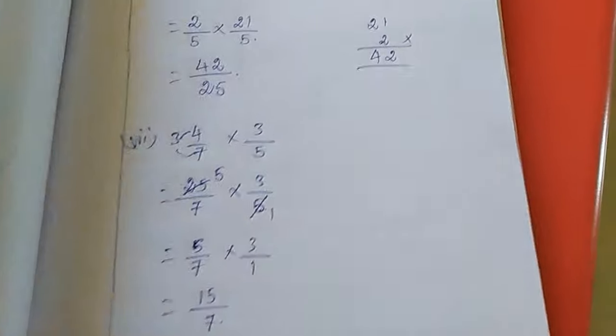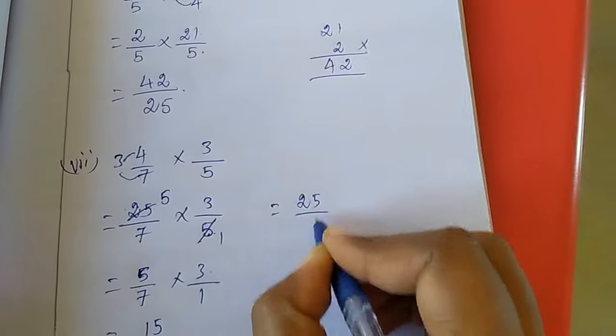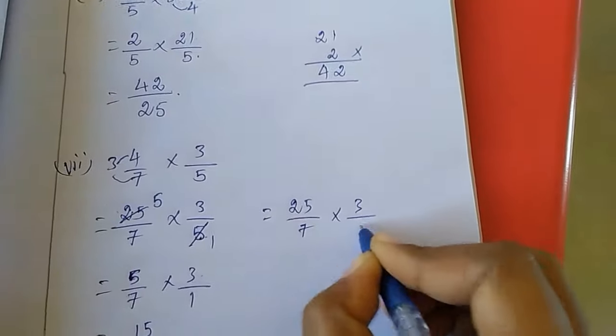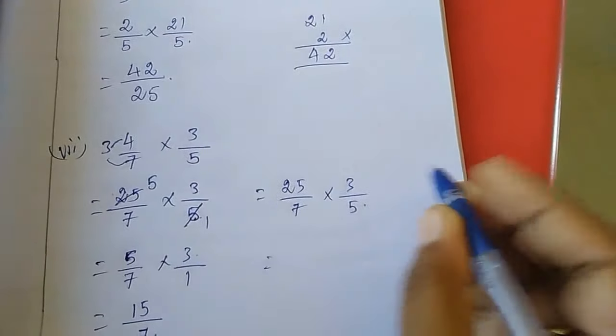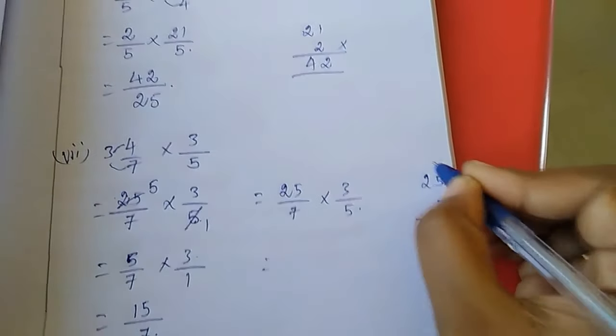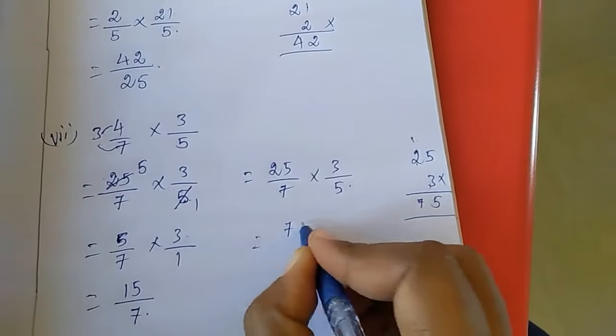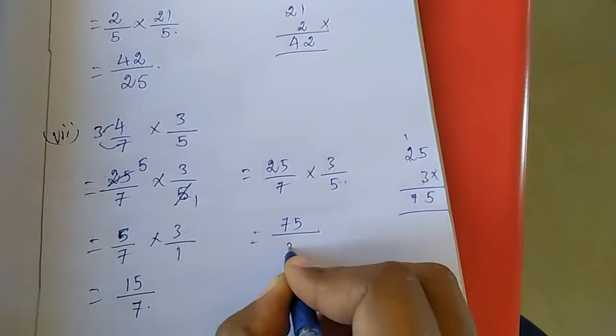Like this also we can do, or else if you see here, second model: 25/7 into 3/5. Here if you multiply 25 and 3, you have to multiply this. 5 times 3 is 15 carrying 1, 6 times 3 is 18 plus 1 is 19, so 75.